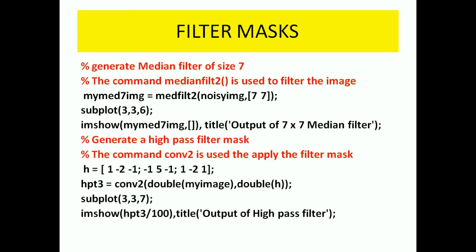Next, we are using a high pass filter mask. Again we are using the MATLAB command for 2D convolution. We simply apply this high pass filter mask: h equals a matrix, which is the high pass filter mask matrix. That will be convolved with my_image so that we get the high pass filter output. The subplot position is 3,3,7 — that is the seventh position — and the title is given as 'output of high pass filter'.